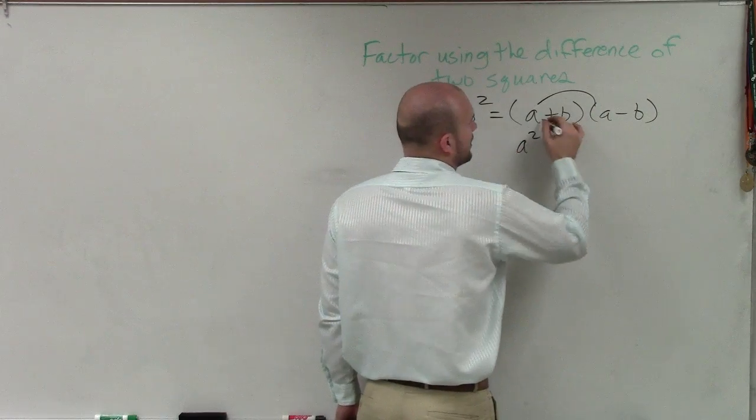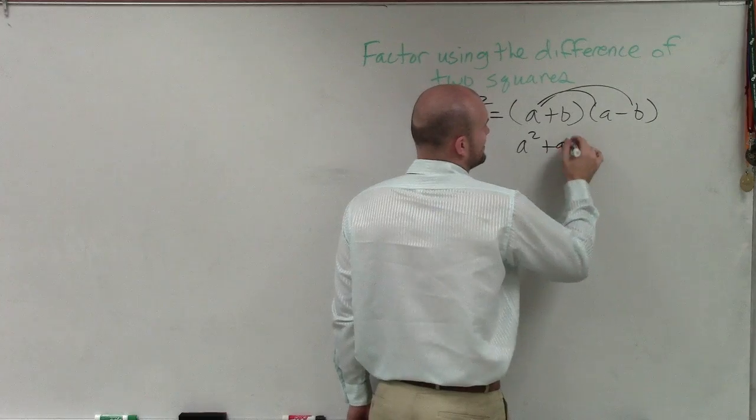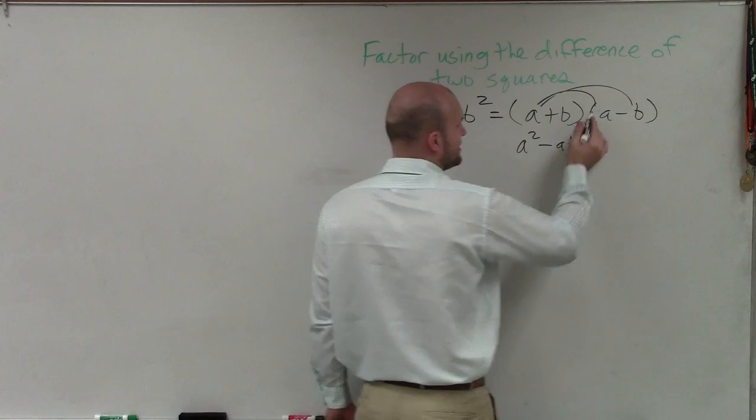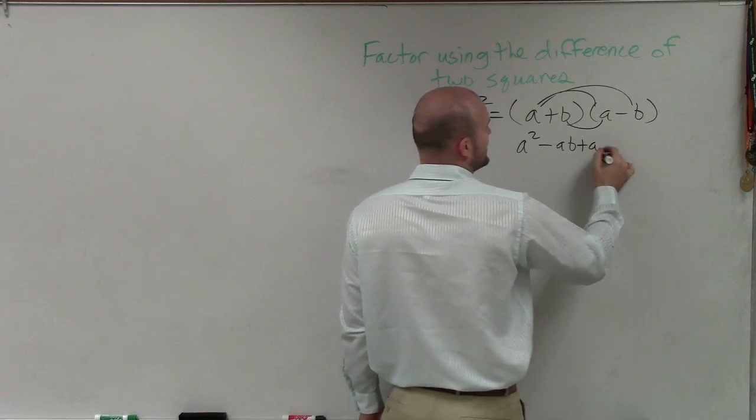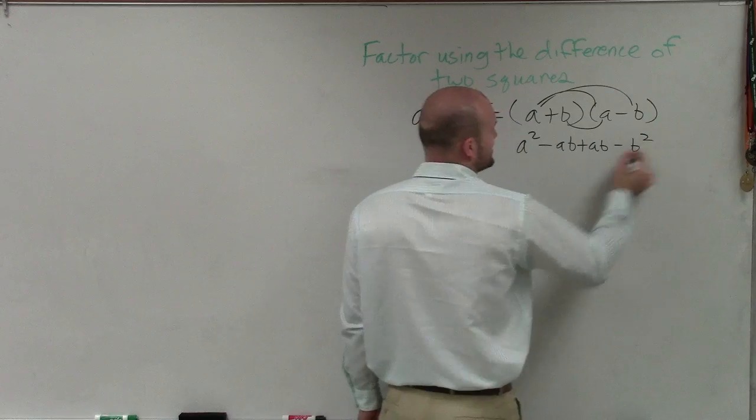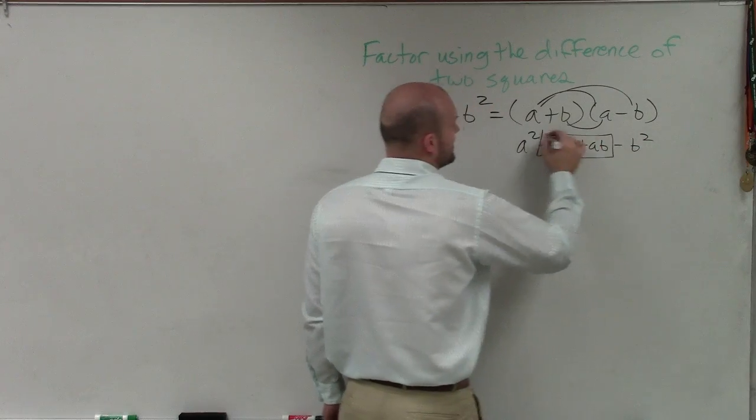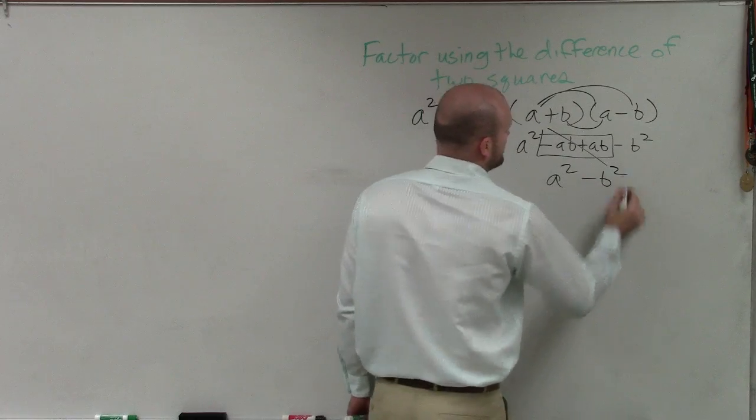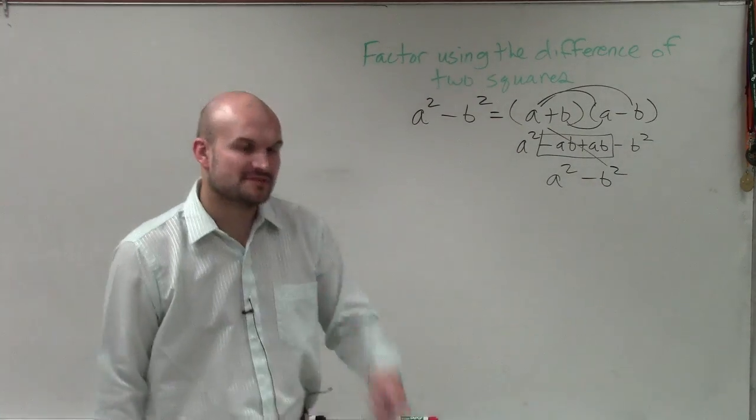The reason being is when I multiply this out, a times a is a squared, a times negative b is negative ab, b times a is positive ab, and b times negative b is negative b squared. Well, a negative ab and a positive ab add to zero, so I'm just left with a squared minus b squared. So that's why the difference of two squares works.